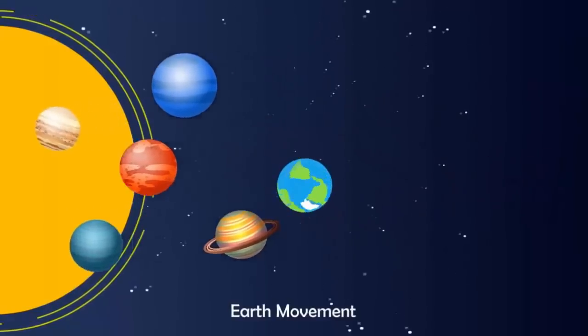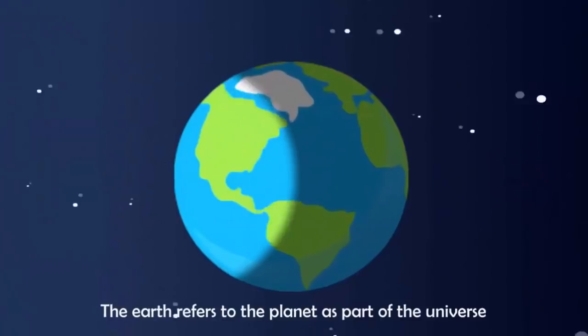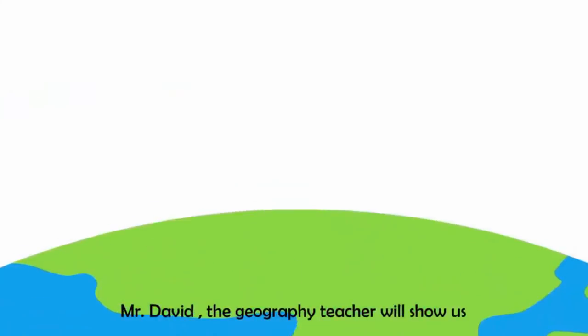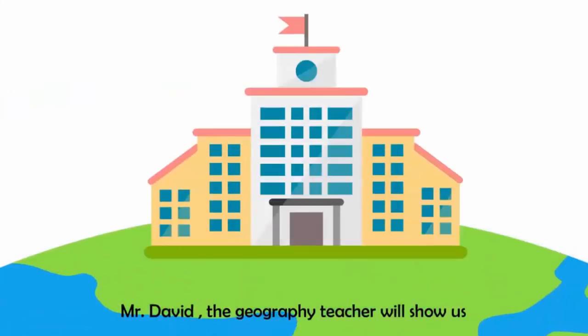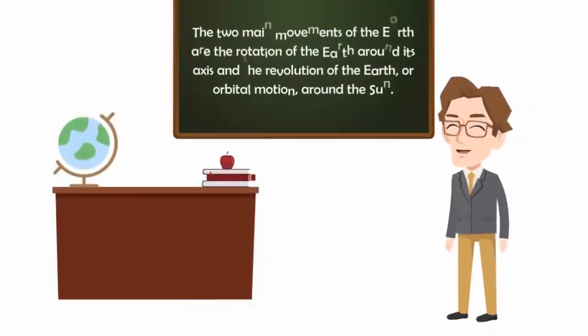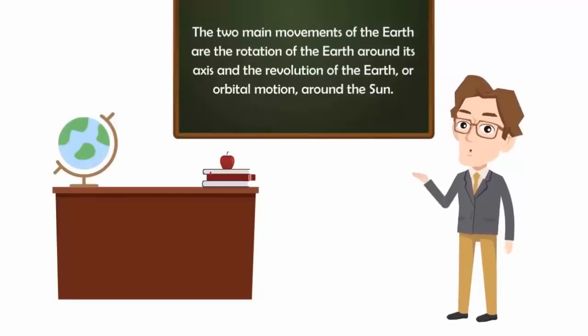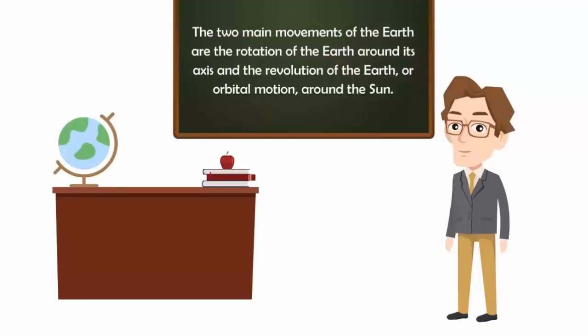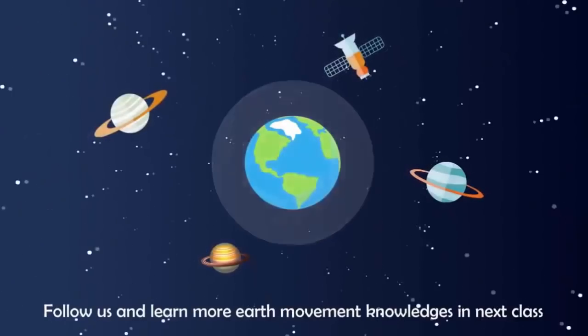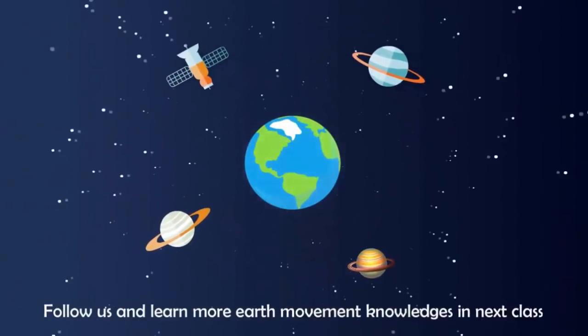We are going to talk about the Earth movement. The Earth refers to the planet as part of the universe. Mr. David, the geography teacher, will show us how the Earth moves in his class. The two main movements of the Earth are the rotation of the Earth around its axis and the revolution of the Earth, or orbital motion, around the sun. Follow us and learn more Earth movement knowledge in the next class.